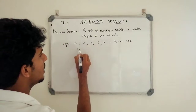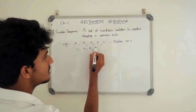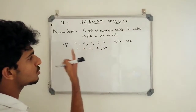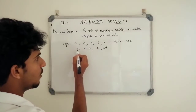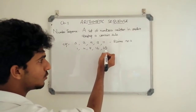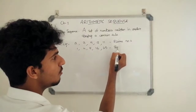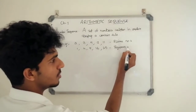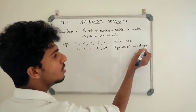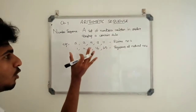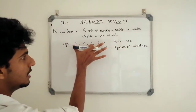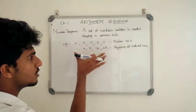Here is another number sequence: 1, 4, 9, 16, 25. These are the squares of natural numbers. 1 squared is 1, 2 squared is 4, 3 squared is 9, 4 squared is 16, 5 squared is 25. A group of numbers ordered following a certain rule — this is the prime numbers example, and this is the squares of natural numbers.